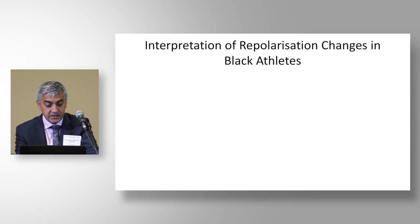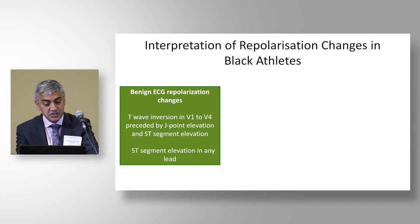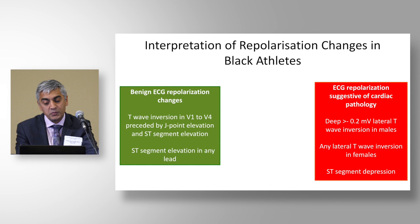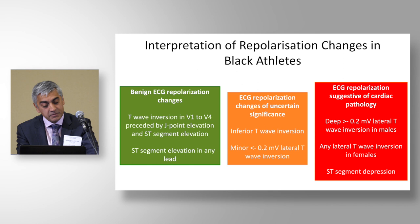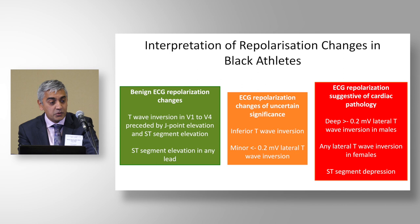Here is how I would interpret repolarization changes in black athletes. Benign: T-wave inversion in V1 to V4 preceded by J-point elevation and ST-segment elevation; ST-segment elevation in any lead. Abnormal: deep T-wave inversion more than 2mm in the lateral leads in any male; any lateral T-wave inversion in females; and ST-segment depression. Inferior T-wave inversion in black athletes does not necessarily mean pathology, and minor lateral T-wave inversion does not necessarily indicate pathology either. One equivocal finding puts you in a grey box; two puts you in the red box.